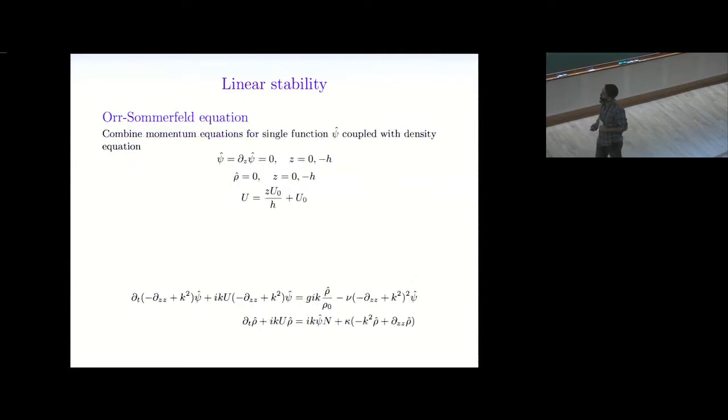So a standard thing to do is to consider something that's kind of like an Orr-Sommerfeld equation, where you eliminate the pressure. When you eliminate the pressure, you end up with this differential equation, PDE for the Fourier transform of the stream function. If this term is not there, it just looks like typical Couette flow. It's this density term that's coupling with the density equation that's giving this coupled system.